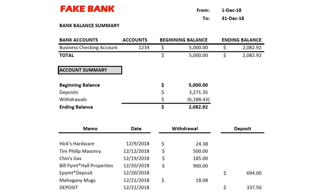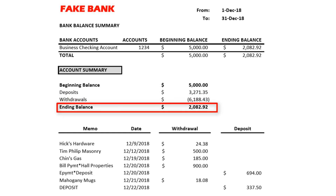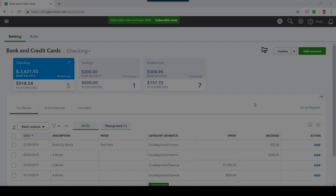Bank statements from various banks may look a little different from each other, but they do have a few things in common. These include a date range — this is usually from the first day of the month to the last day of the month. A beginning balance — this is the bank balance on the first day of the period, usually the month. An ending balance — this is the bank balance on the last day of the period.